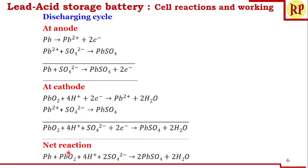Now, the net reaction of the cell combines the anodic and cathodic reactions: Pb + PbO₂ + 4H⁺ + 2SO₄²⁻ → 2PbSO₄ + 2H₂O. There are no electrons in the net reaction because the electrons produced at the anode are consumed at the cathode. This is the net reaction for the discharging cycle when it acts as an electrochemical cell.